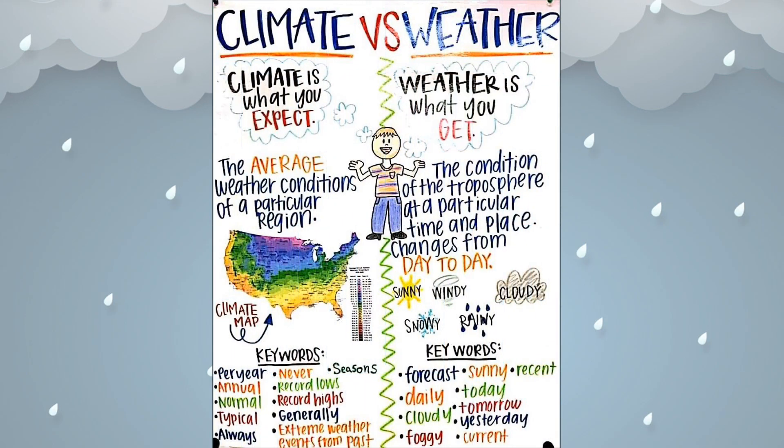Let's find out what is the basic difference between climate and weather. Climate is what you expect and weather is what you get. The average weather conditions of a particular region over time is called climate.